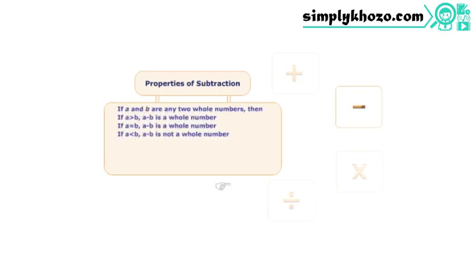Like natural numbers, when we subtract a smaller whole number from a larger one, the result is also a whole number. When we subtract two equal whole numbers, we get the whole number zero.